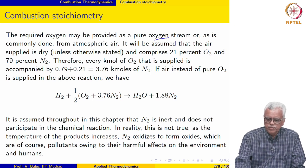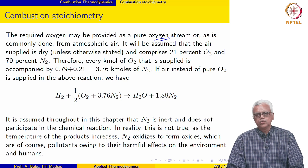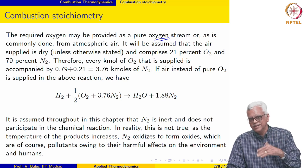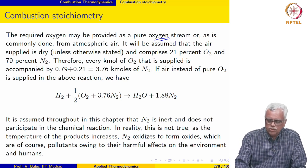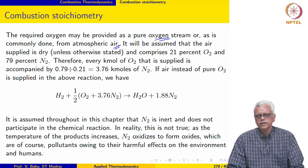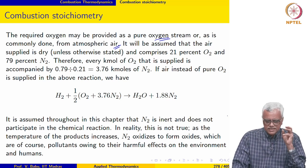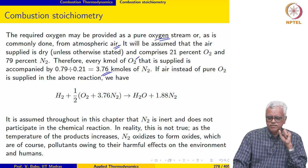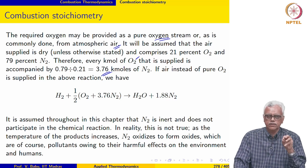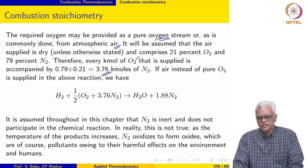The required oxygen may be provided either as a pure oxygen stream or, as is commonly done, taken from atmospheric air. Atmospheric air, in the absence of humidity, contains 21% O2 by volume and 79% N2 by volume. So every kilomole of O2 supplied is accompanied by 3.76 kilomoles of N2.